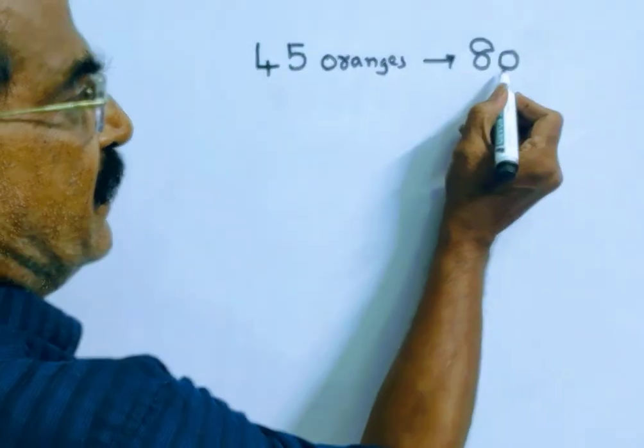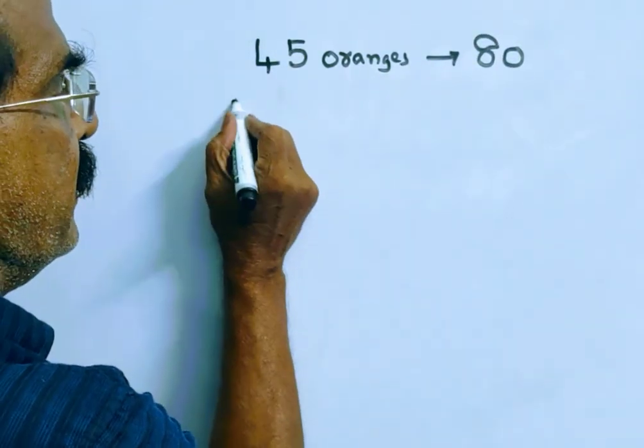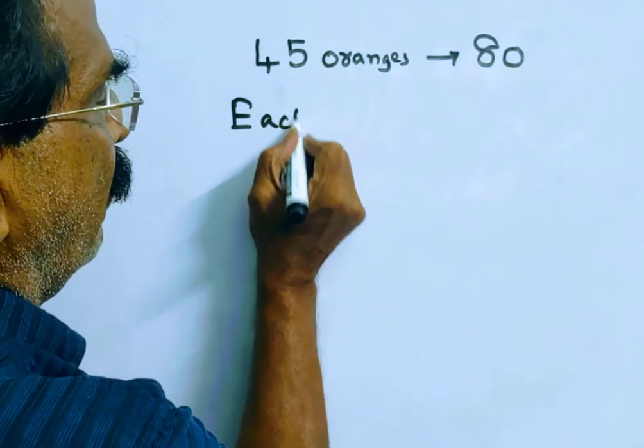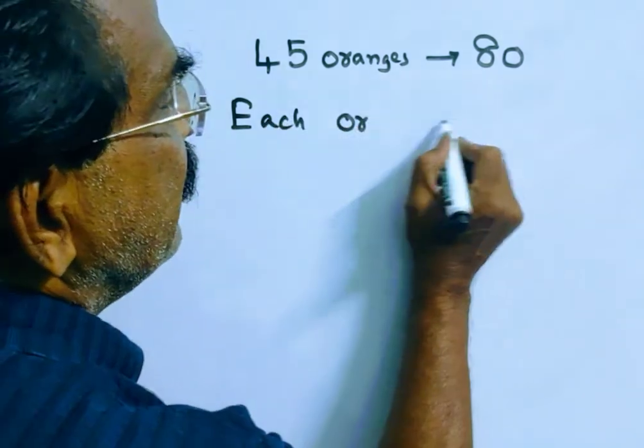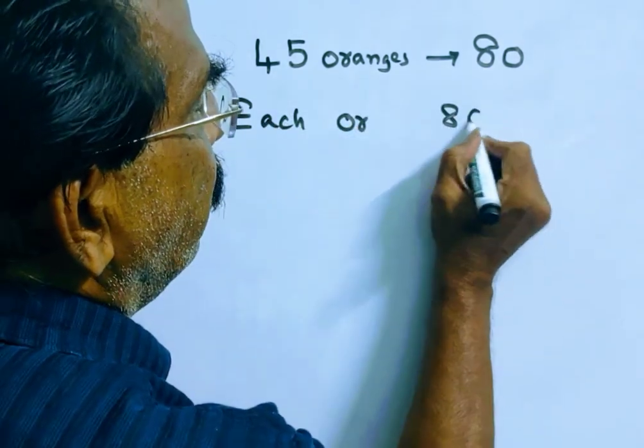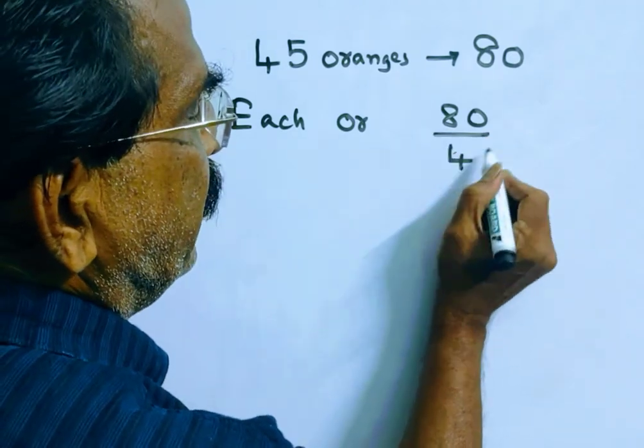See friends, 45 oranges for Rs. 80 means each orange selling price is 80 by 45.